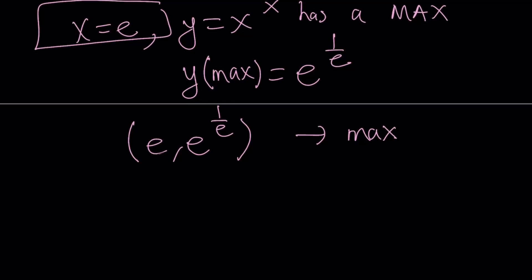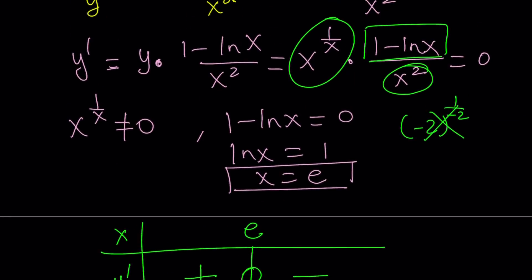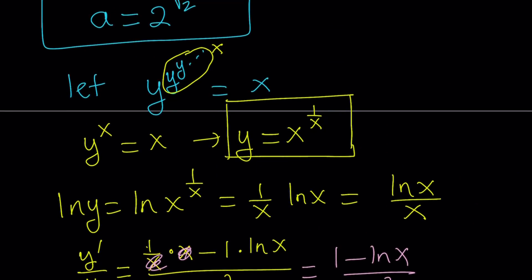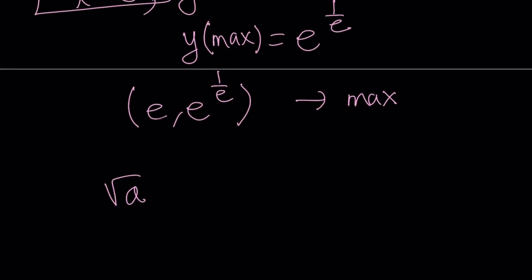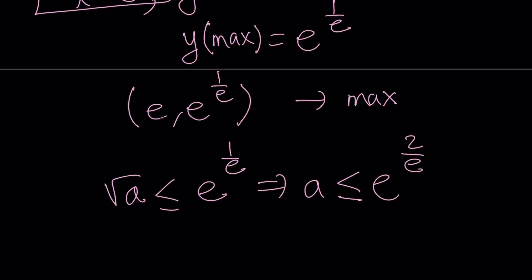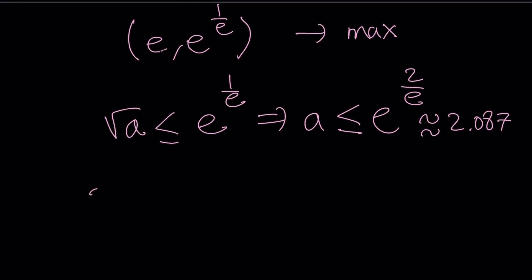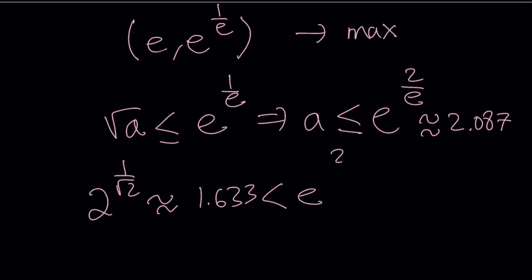Let's take a look at a couple of things, then I'll show you the graph. Our base — square root of a, or the y value — has a maximum value of e to the power 1 over e. This means the base needs to be less than or equal to e to the power 1 over e for the expression to converge, which is approximately 1.4447, so e must satisfy e ≤ e^(2/e), approximately 2.087. Our solution, 2 to the power 1 over root 2, is approximately 1.633 — definitely less than e to the power 2 over e — so it satisfies the criteria and our expression converges.